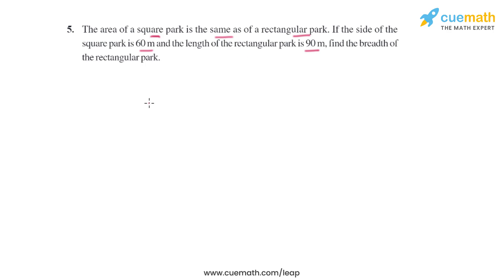It is given in the question that the area of a square park equals the area of a rectangular park. So let's say AS is the area of the square park and AR is the area of the rectangular park.